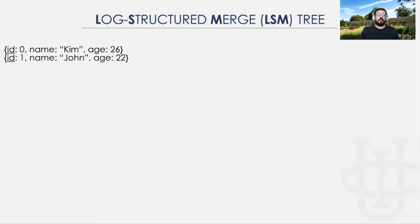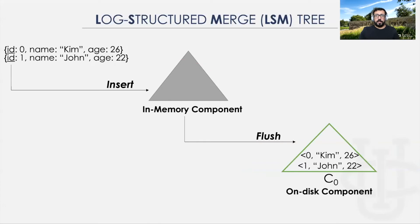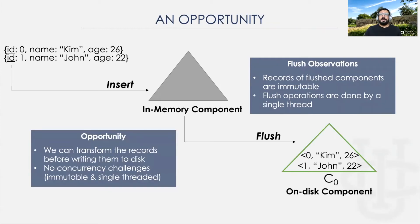So how does S6DB handle incoming data? When data arrives to the system, the records get inserted into the in-memory component. Once the memory component is full, the LSM-tree manager triggers a flush operation, which writes the records of the memory component to disk sequentially into an on-disk component, during which the records cannot be modified. In the flush operation, we observe that the records of flushed components are immutable, and the flush is done by a single thread to ensure sequential and ordered writes. We can see there is an opportunity here: before writing the record to disk, we can transform them into a more compacted form, and we can do so without any concurrency challenges.